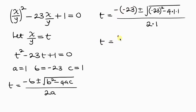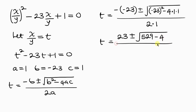Simplifying: negative times negative is positive, so we have 23 plus or minus the square root of 529 minus 4, all over 2. So t equals 23 plus or minus the square root of 525, all over 2.